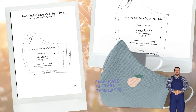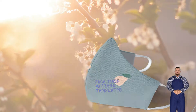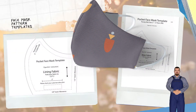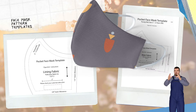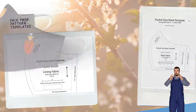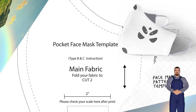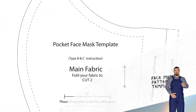2. Ordinary Face Mask Sewing Pattern with 1/4 inch seam allowance included. Use only on Type A: men, women/teenagers, kids 7 to 12, kids 3 to 6.